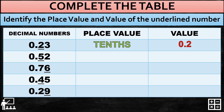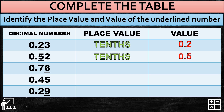Next, the underlined number 5 also has a place value of tenths because it is on the first digit after the decimal point. The value of it is 0.5.